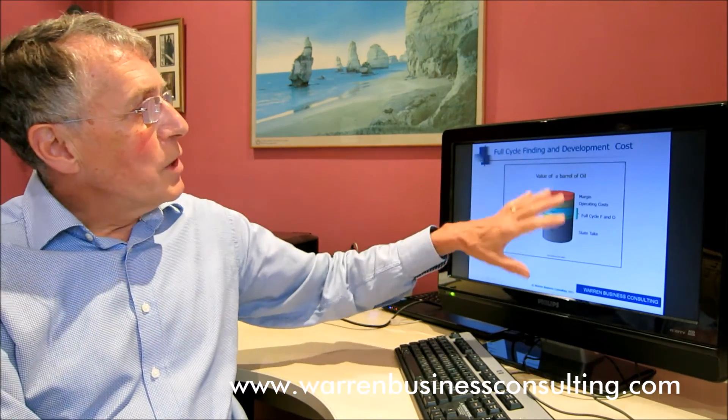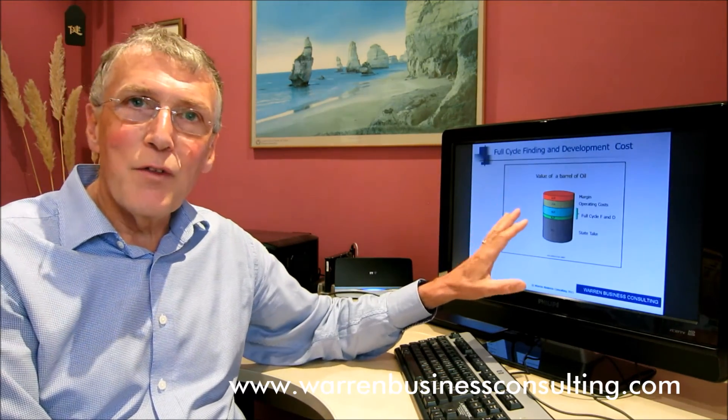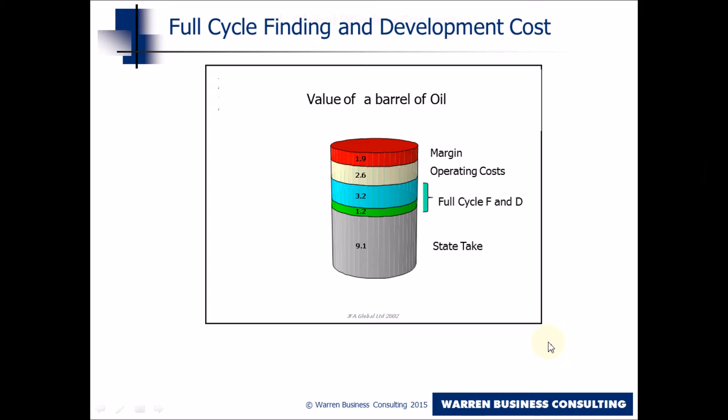When you look at a barrel of oil, you've got to remember, of course, the barrel is found in the context of a basin, as we've discussed earlier. In that basin, the government sets terms, so for the price you get for a barrel of oil, the state is going to take its share and there are going to be the operating costs involved of operating the field throughout its life.